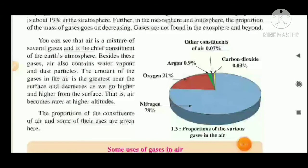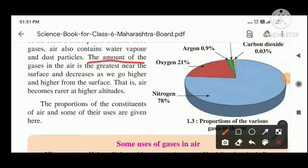Air is a mixture of several gases. It also contains water vapor and dust particles. The amount of gases in the air is greatest near the surface and goes on decreasing as we go higher and higher altitudes, where the air becomes rare.